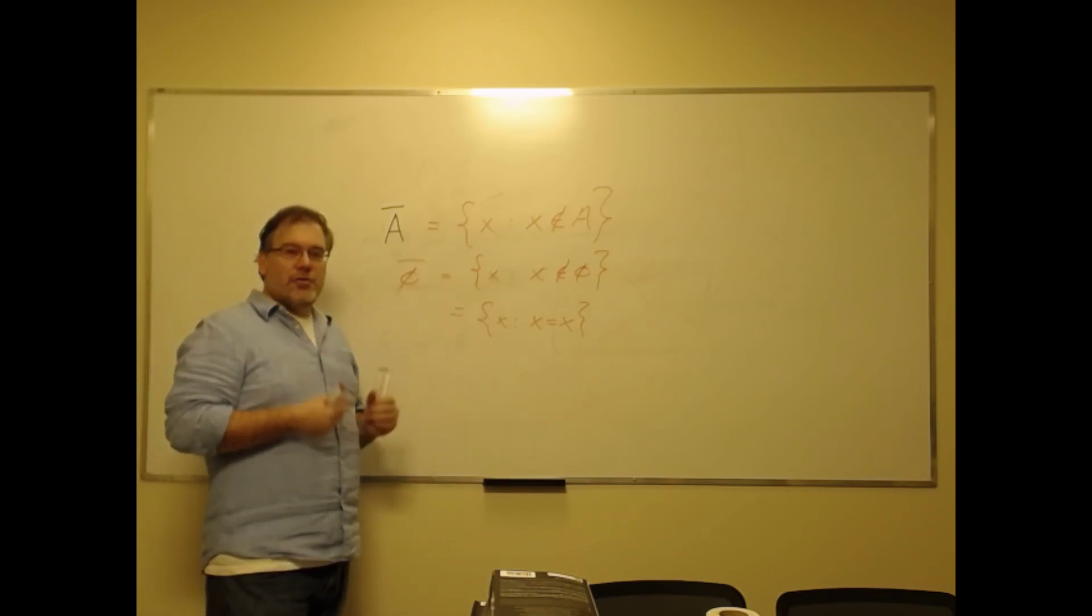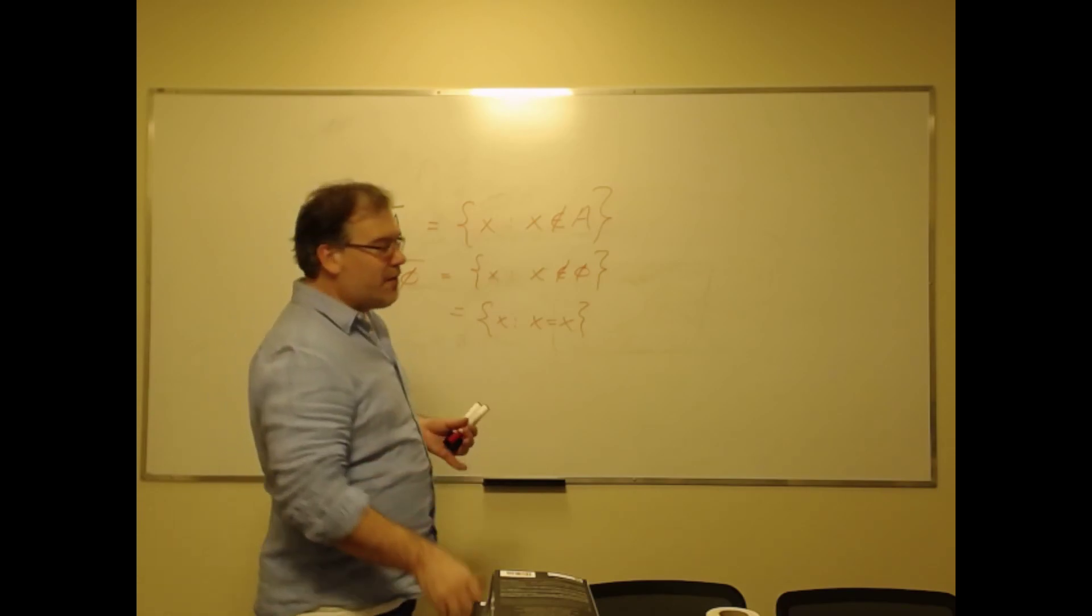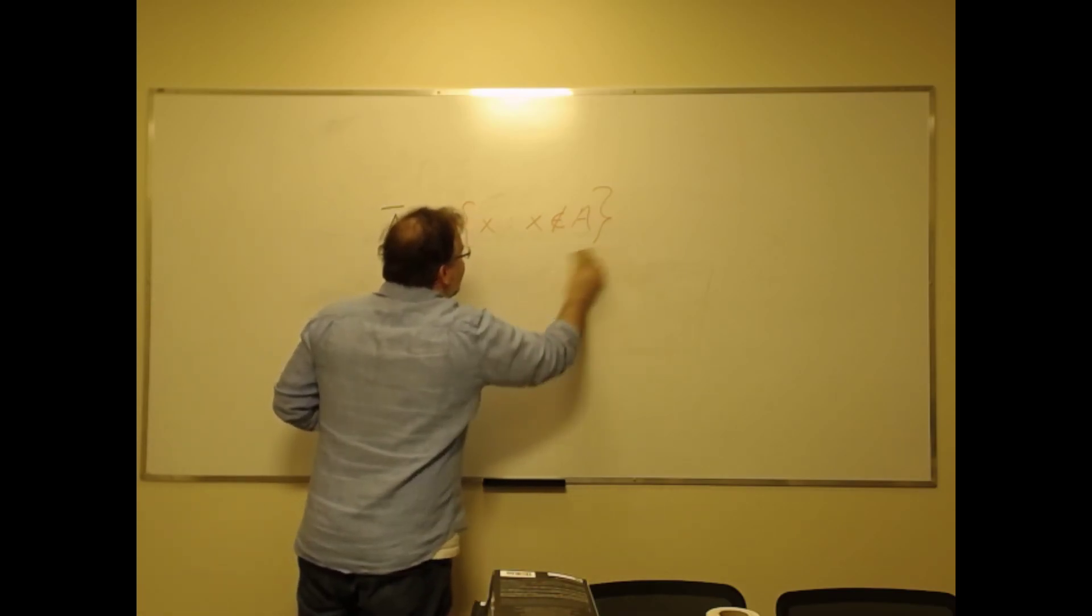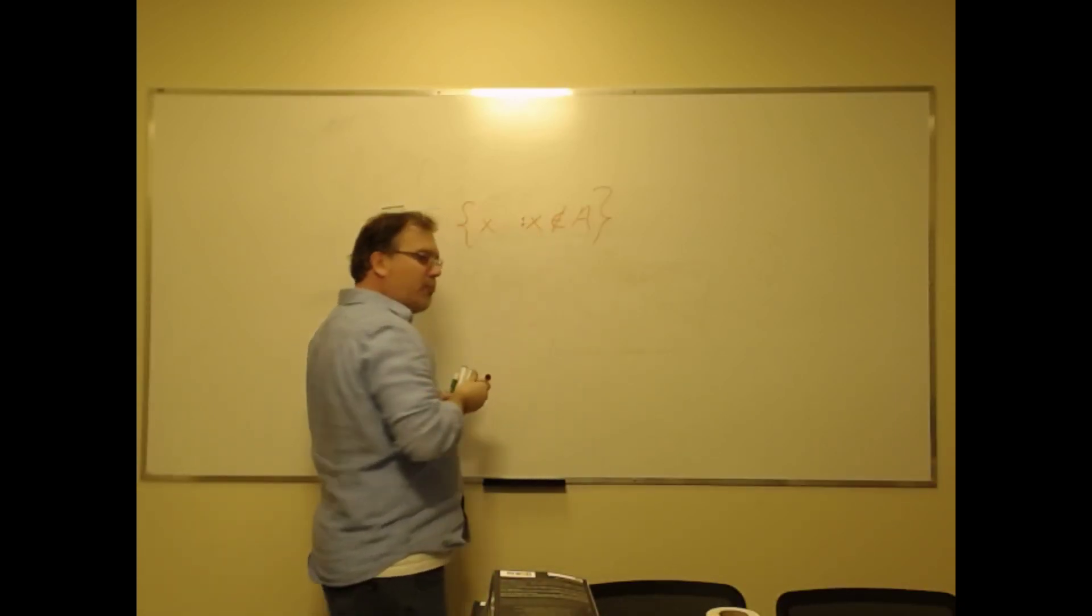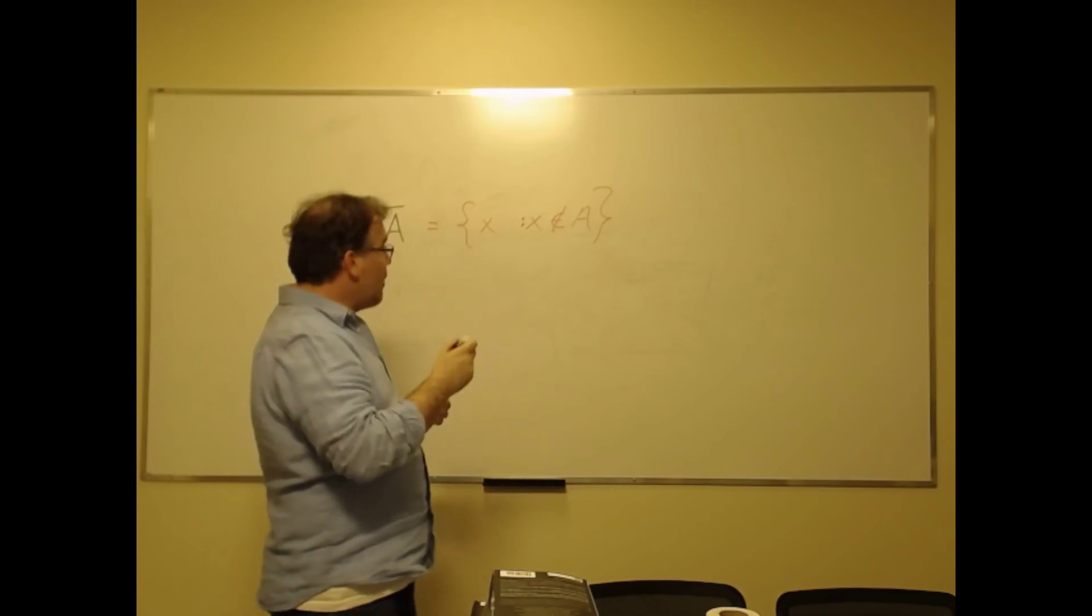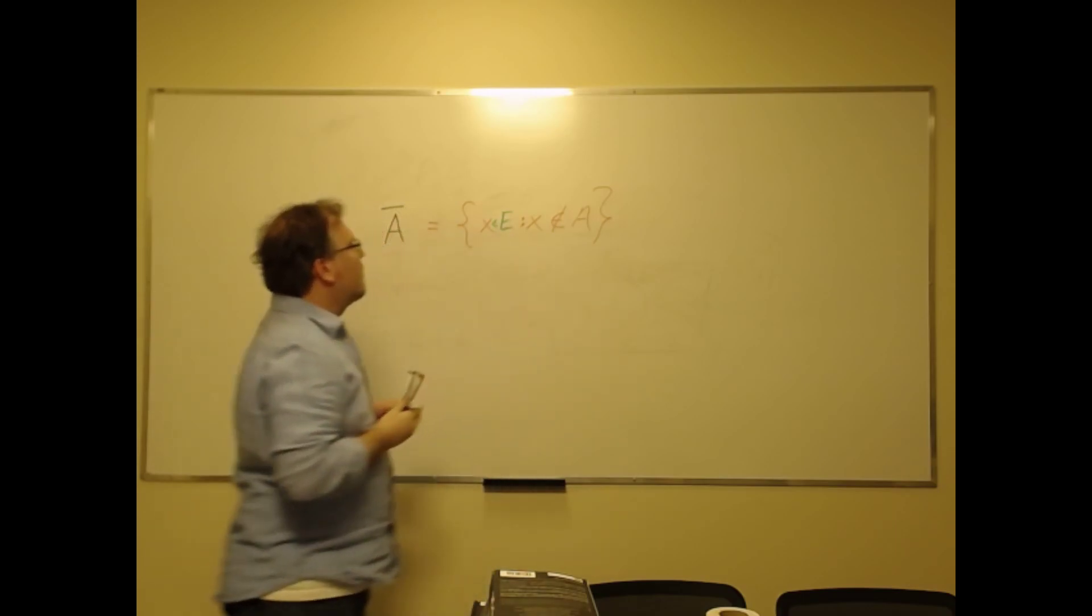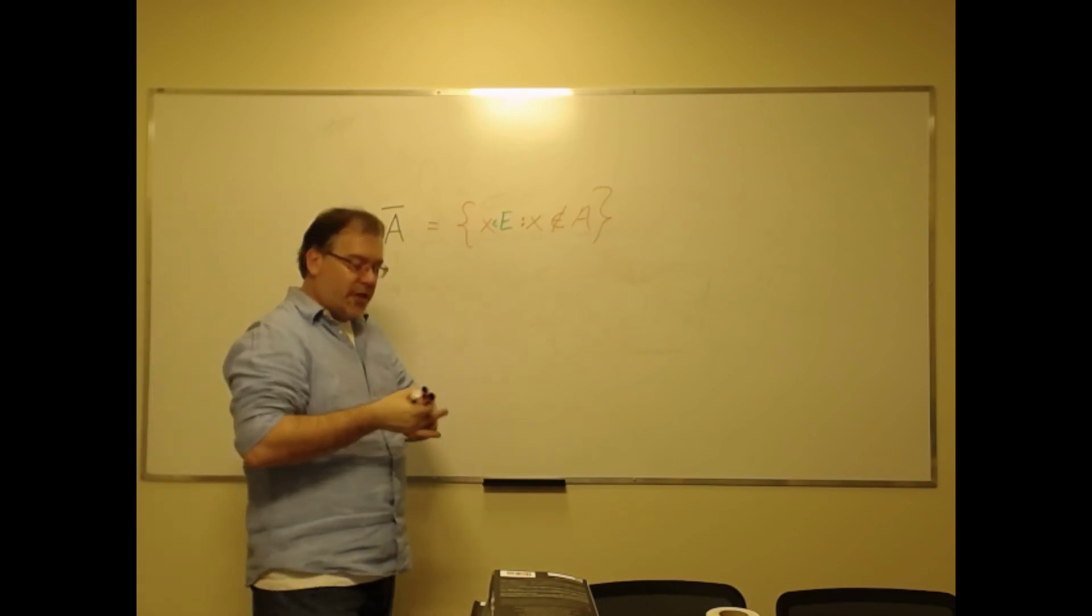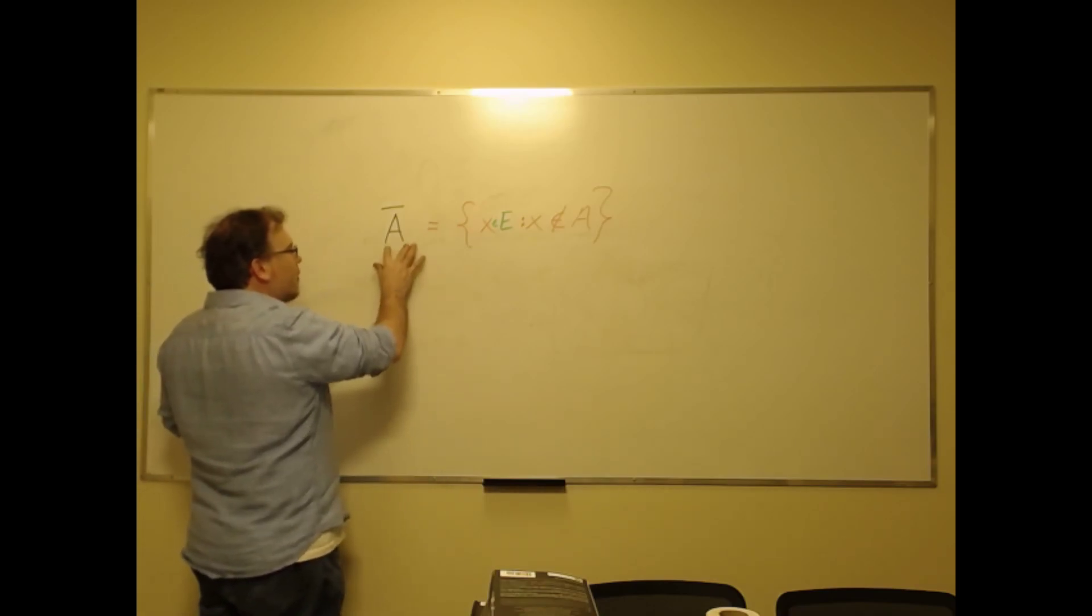Which could be used to generate the Russell paradox, which would make our theory of sets inconsistent. So we definitely do not want to do that. But we see that the only mistake that we made here was by using the comprehension principle that we ruled out. So if we just specify an environment, then the complement—then we're going to be okay. Because then the complement of the empty set is just going to be the set E.